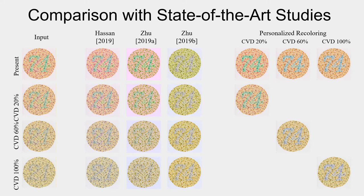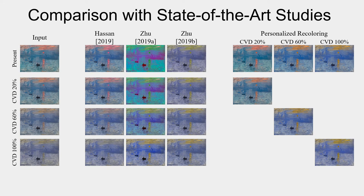We compared the proposed method with three state-of-the-art studies. All three existing methods either failed for some degrees of CVD for contrast enhancement, or failed to preserve naturalness. For all CVD degrees, the proposed method enhanced the contrast well and the color deviation is minimal. In this example, no existing methods can simultaneously enhance the contrast and preserve the naturalness. The proposed method works well for all CVD degrees.